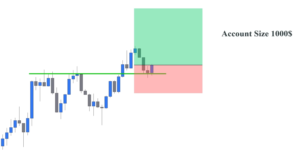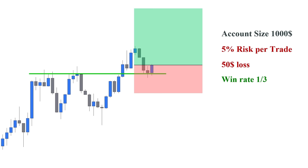Our position size determines what percentage of our capital will be lost if the price hits our stop loss. If we risk 5% of our account size on this trade and get stopped, we will lose $50, and if we win one out of three trades, we will still be at break-even. That does not sound so bad. But what if we lose five trades in a row in a bad trading week, which is likely to happen to everyone — we will lose 25% of our capital in a week, and imagine how much it can be annoying and destructive to future trading decisions.